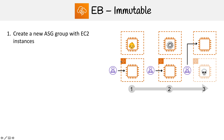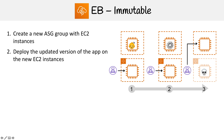What we're going to do is make a new auto scaling group with however many servers we need to replace. Then we're going to deploy the updated version of our app on the new EC2 instances in that new auto scaling group.